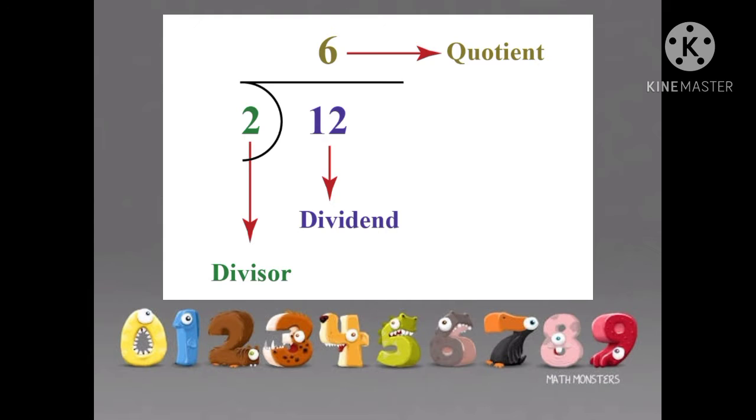Quotient is the result, the answer we get after dividing. Then the second is the divisor. Divisor is 2. The number which divides the dividend is called the divisor. So, dividend is 12. The number to be divided is called dividend. All these three things are placed in their position with the proper number so you can understand.